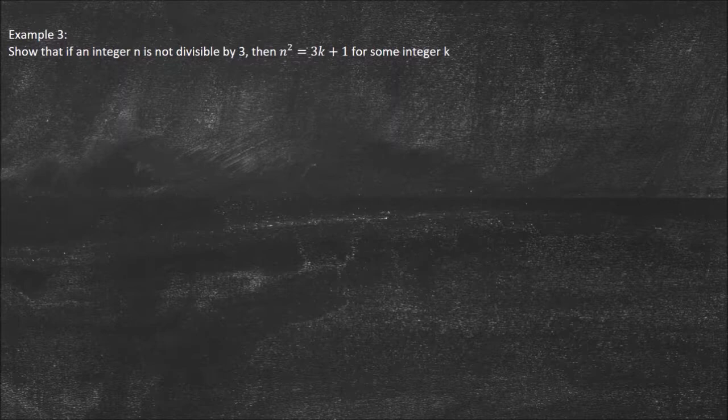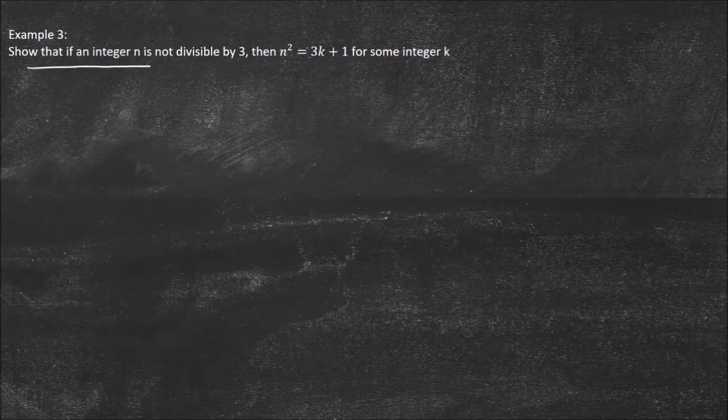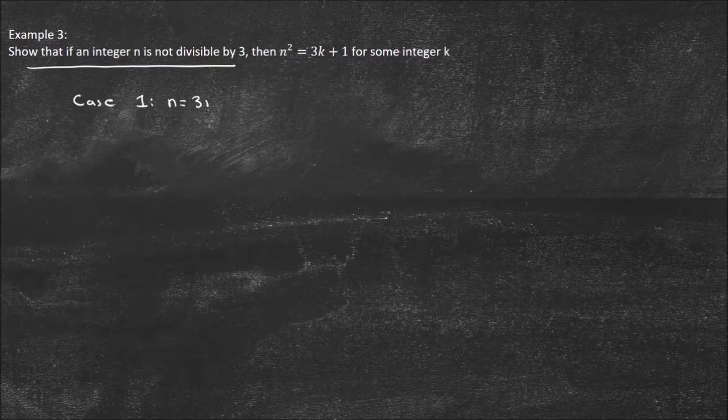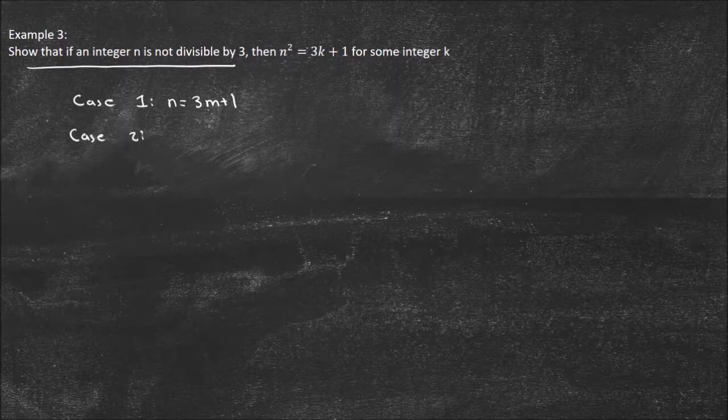What are the cases? I'm going to think, what are the cases such that n is not divisible by 3? Well, case 1, you've got to be creative here. If n is not divisible by 3, then n has to equal 3m plus 1, or case 2, n has to equal 3m plus 2.